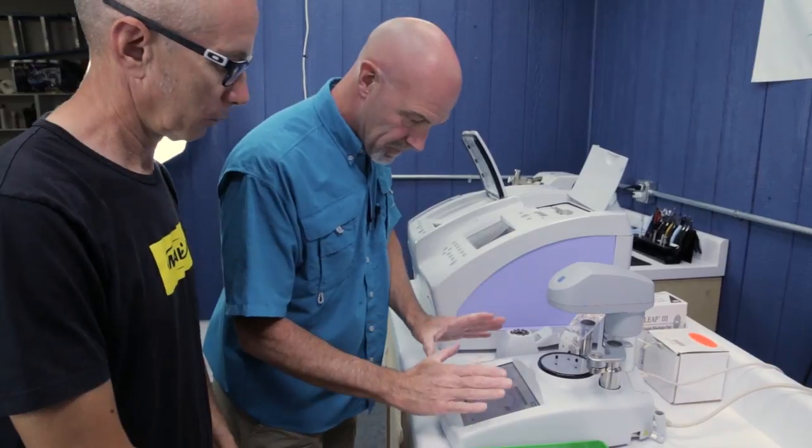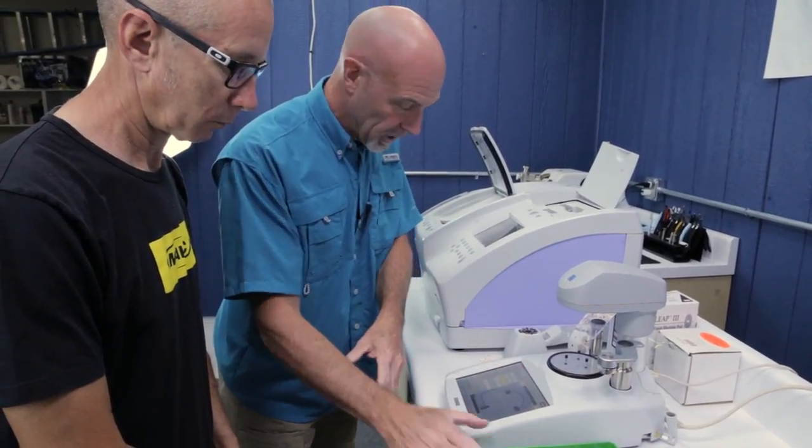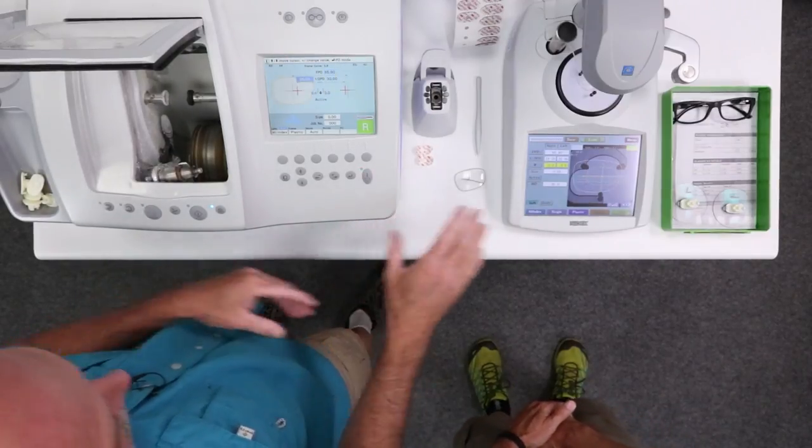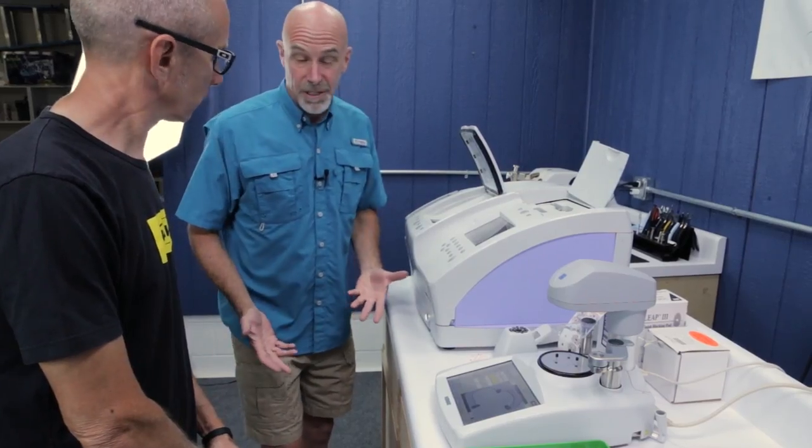So now it knows you. And now it knows all the things it needs to know about the lens and the frame in order to cut these right. So. All right. So now we have told this everything that needs to know about you and about the frame and about the lens. Now I hit data entry. And that brings everything from here to the edger itself.